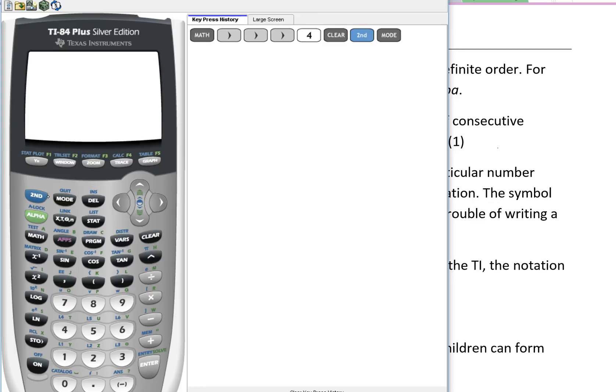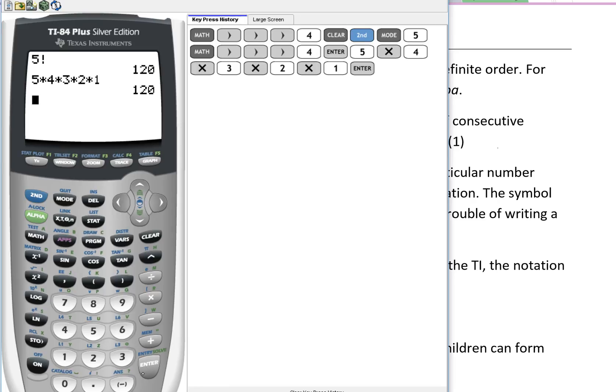If I wanted that 5 factorial, so math, probability 4, so 5 factorial, enter. And that's the same as 5 times 4 times 3 times 2 times 1. Gives you the same answer. So instead of doing that each and every time, just type in 5 factorial.